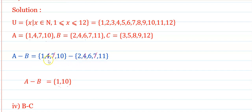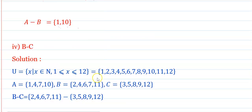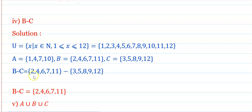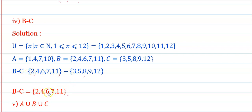Next, A minus C: 4 and 7 are common with C, so delete 4 and 7 from A, giving the remaining elements. Next, B minus C: checking all elements of B — 2, 4, 6, 7, 11 — none are common with C = {3, 5, 8, 9, 12}. Therefore B minus C equals B itself, i.e., {2, 4, 6, 7, 11}, since B and C are disjoint sets.